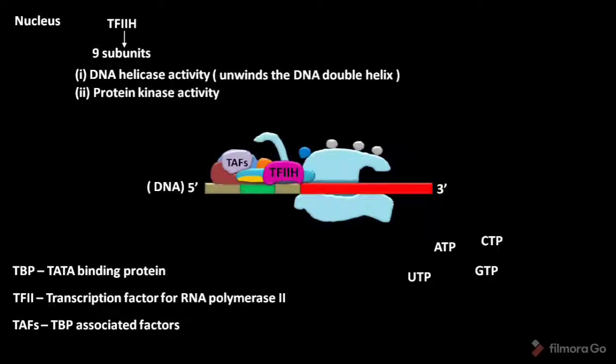Due to this protein kinase activity, this subunit of TFIIH phosphorylates the serine of the CTD or tail of RNA polymerase II.